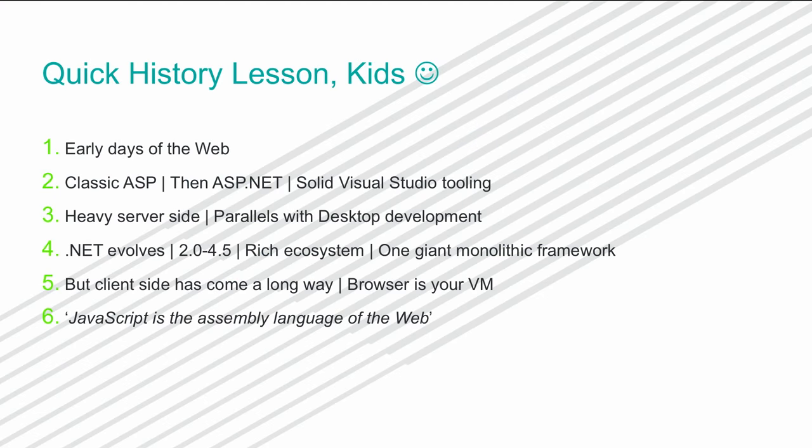Starting with .NET 2.0 all the way to 4.5, we have a very rich ecosystem in .NET. There's something to be said about that — our tooling in Visual Studio is top notch. We have a very strong ecosystem of support utilities, frameworks, and some of the best tooling out there. One thing to pick about .NET is that it was still one giant monolithic framework — the .NET that runs your WPF apps versus the .NET that runs the web is the same.